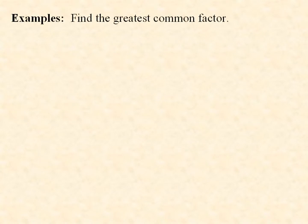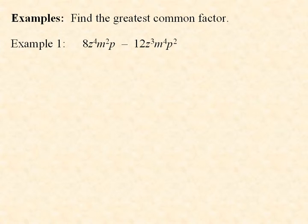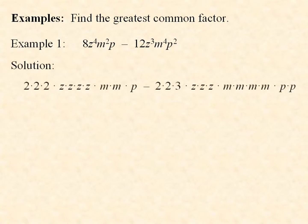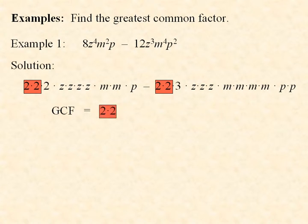Let's look at some more examples. Find the greatest common factor. Example 1. We have two terms here. Again, we write the prime factorization of the numerical parts and write the variables without exponents, and we get this long expression. If we look at the numerical parts, each term contains at least two 2's. The second term contains only two 2's, so we can pull two 2's as the numerical part of the greatest common factor.